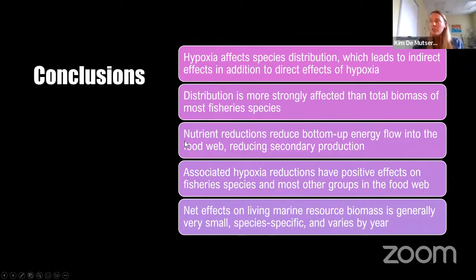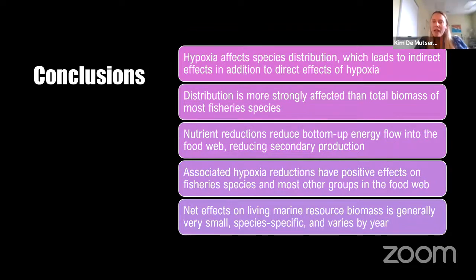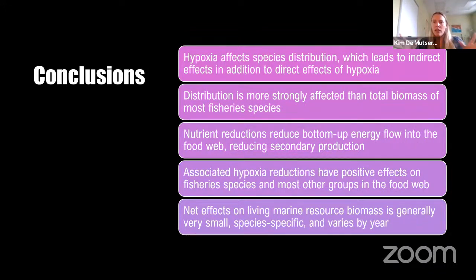What we've seen is that the nutrient reductions needed to reduce hypoxia reduce the bottom-up energy flow into the food web, reducing secondary production. But the associated hypoxia reductions with those nutrient reductions do have positive effects on fishery species, and really most of the groups in the food web. The net effect on the biomass of living marine resources is generally very small, species-specific, and varies by year.